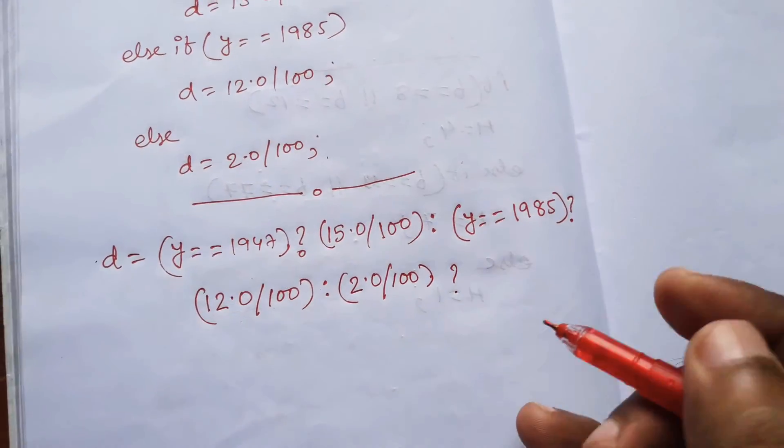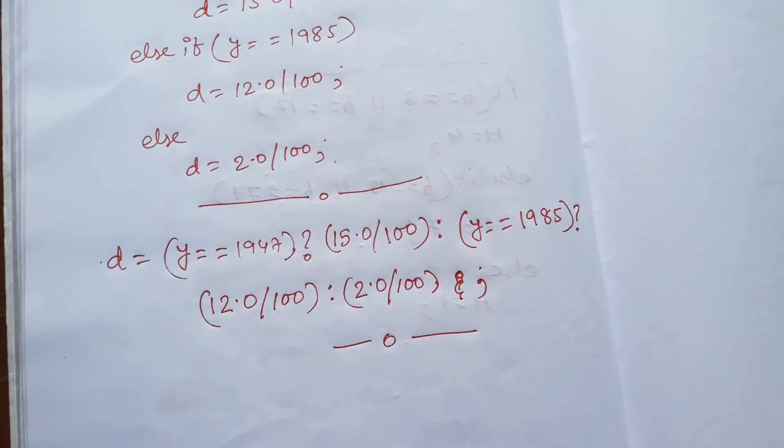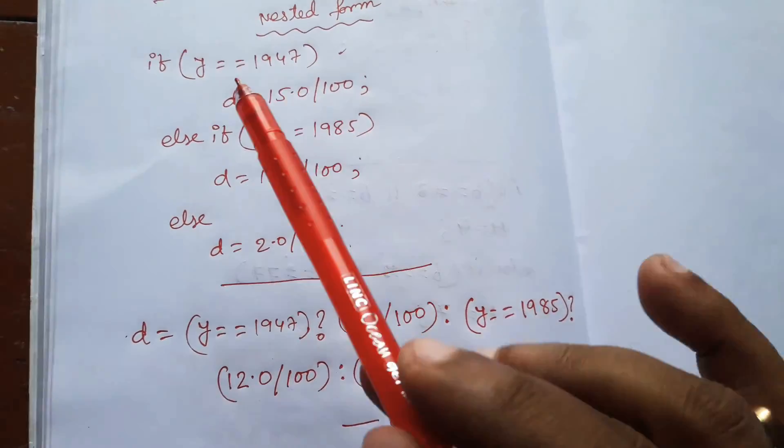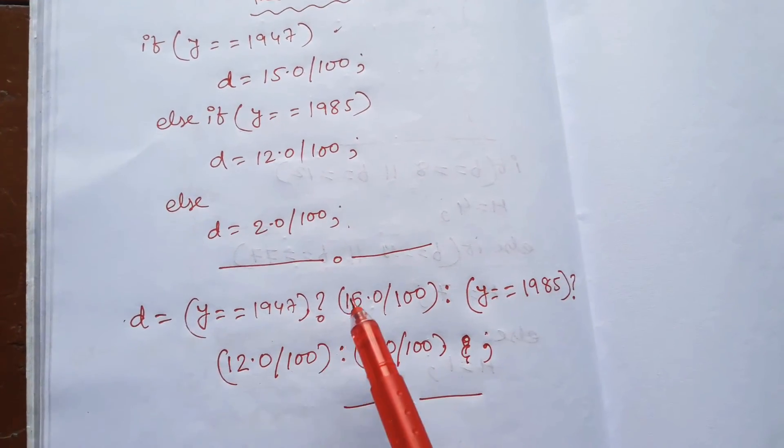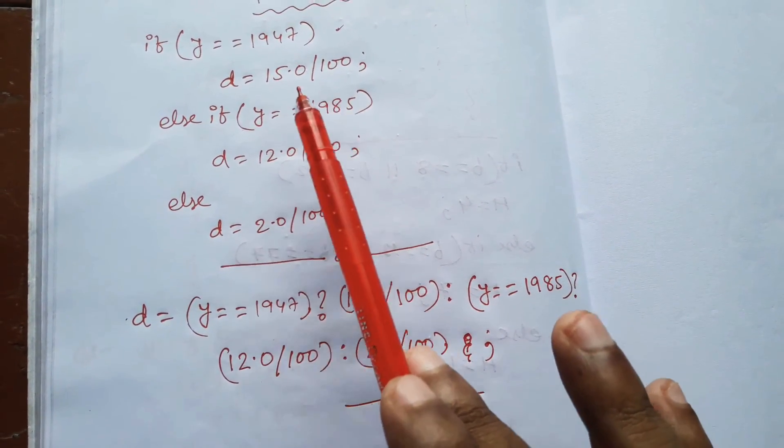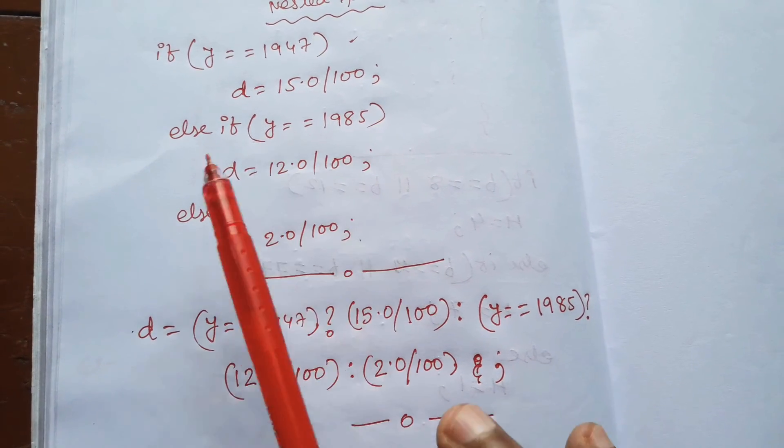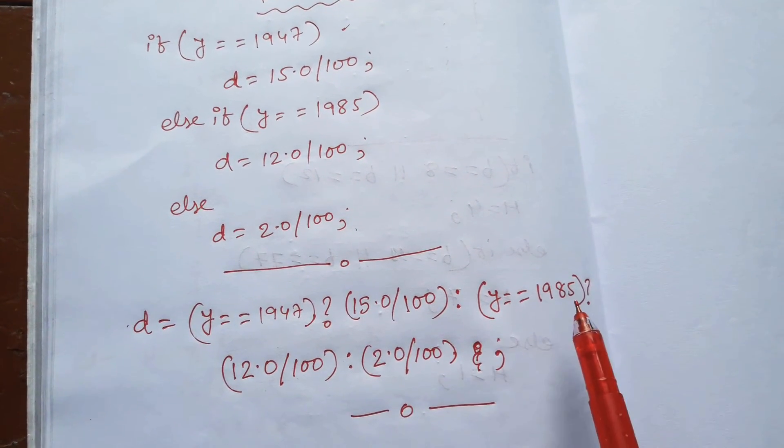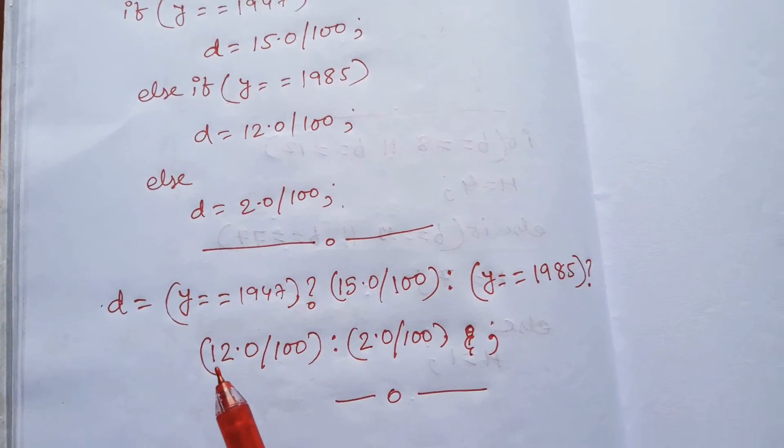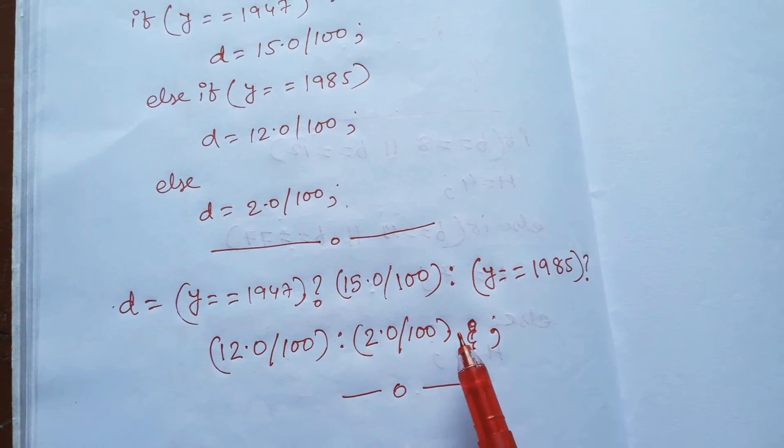So that is our answer. What we have done: first part we write along with question mark, then the part that will be executed. Then colon, second part if-else we write here - condition, question mark, execution part, and then last else part.